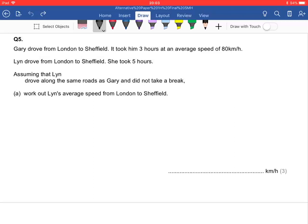Hi guys, let's do some speed, distance, time today, shall we? So we've got Gary who drove from London to Sheffield. It took him three hours at an average speed of 80 kilometers per hour. Lynn drove from London to Sheffield. She took five hours.